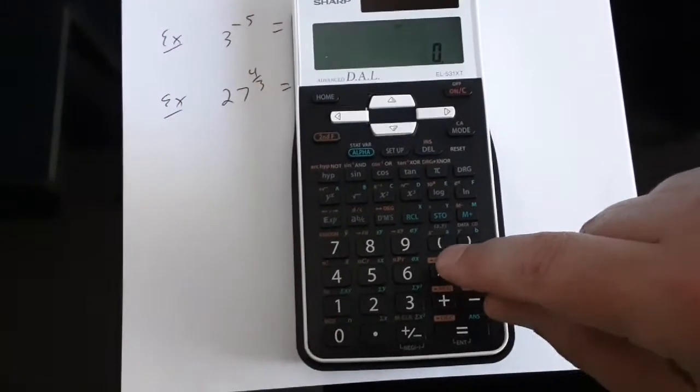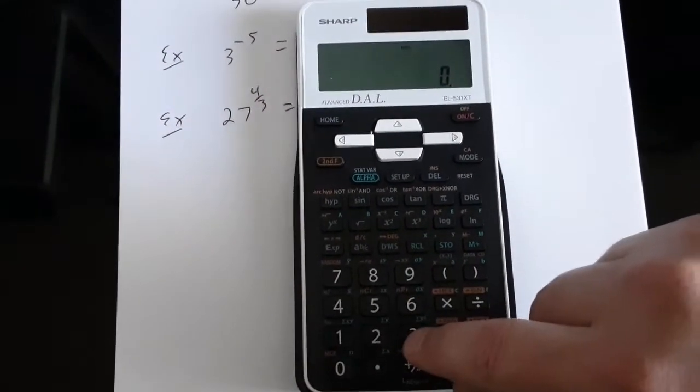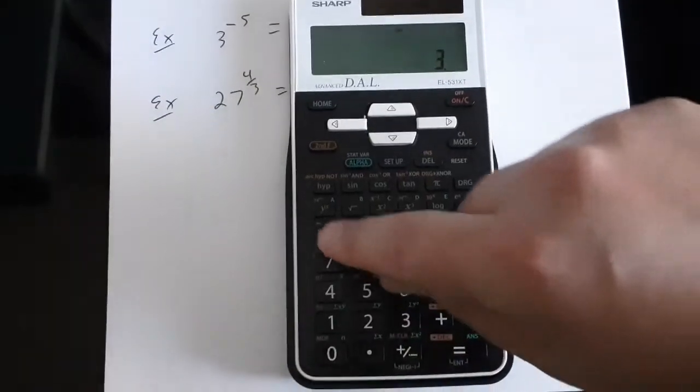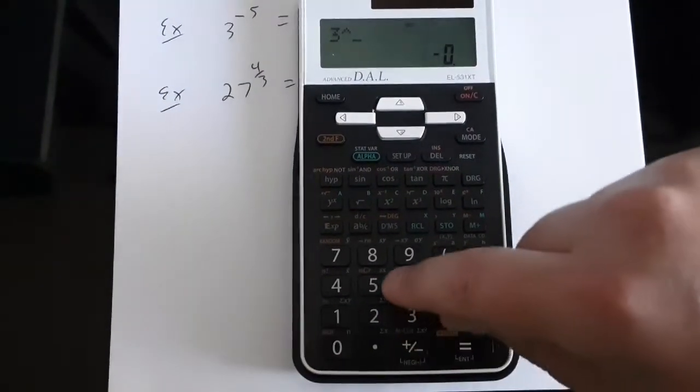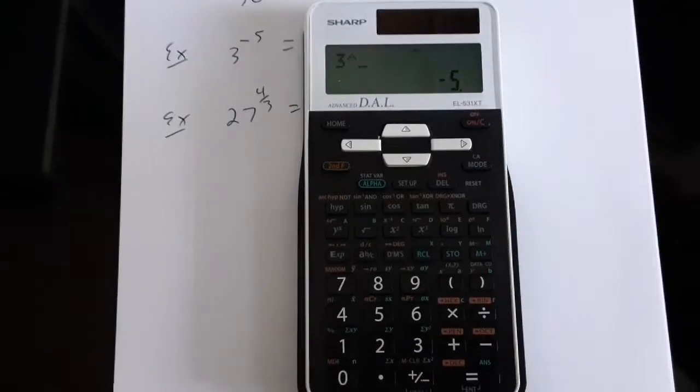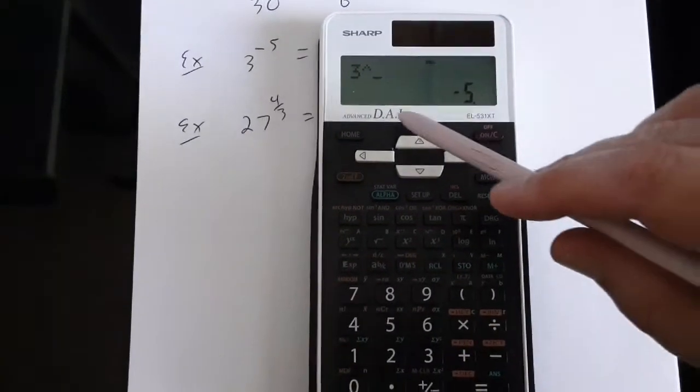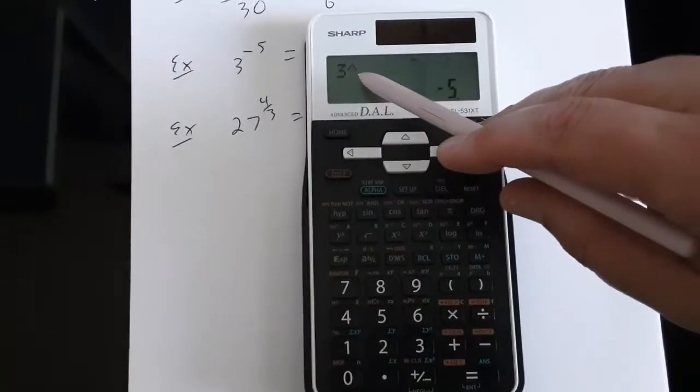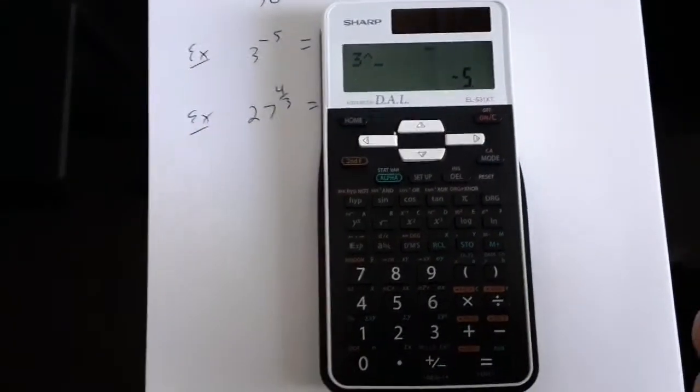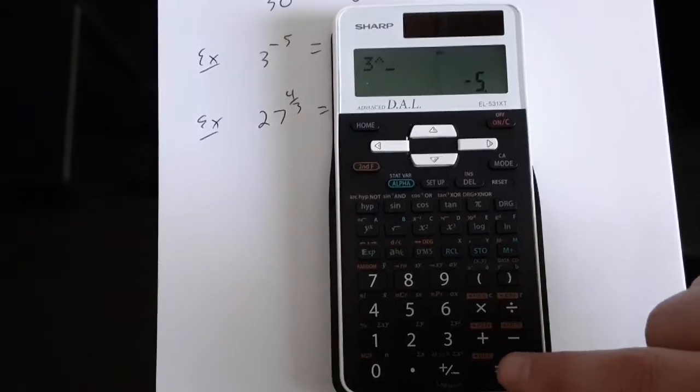So if I want to enter in 3 to the power of negative 5, I would enter 3, exponent button, negative 5. And you can see in the display window the little upside-down v. That's the little symbol that it uses to show exponent. So this is 3 to the power of negative 5.